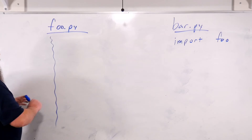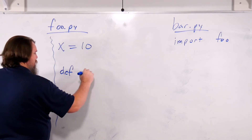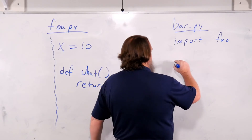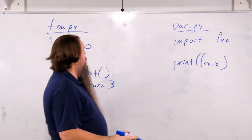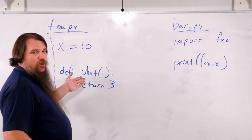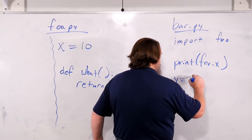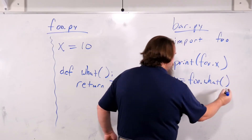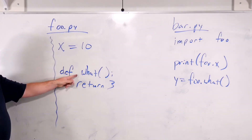So what might be in here? Well, let's imagine that we have x equals 10, and I'll show you a function. Now that we've imported foo, we can say I want to access foo.x — that will access the variable x inside of foo. I want to call the function what, so I can do y equals foo.what. And foo.what is going to call this function over here.